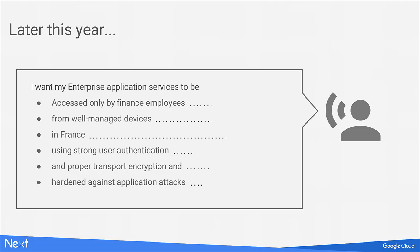We're working on new security features planned for later this year, adding even more controls for enterprise admins. Things such as location and the determined security level of the client, as well as user restrictions, will allow you to both expand access to corporate web applications and at the same time ensure the experience is secure end-to-end. Chrome's support of security keys means administrators can specify that their employees must be strongly authenticated to access a web application.